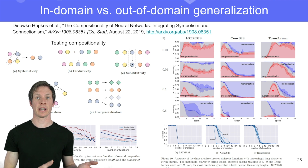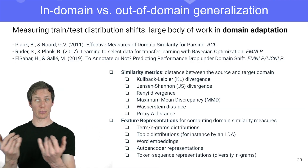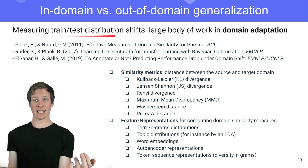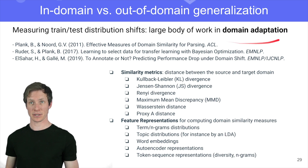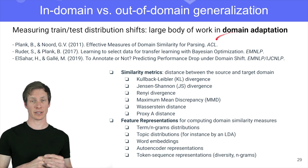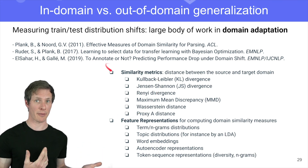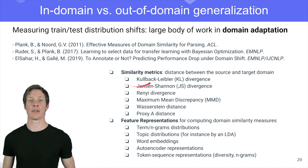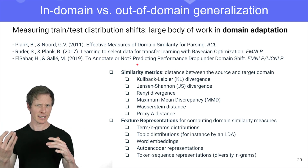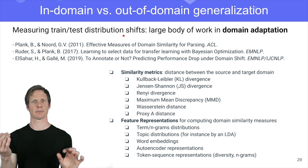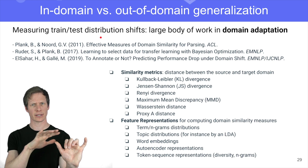Talking about in-domain and out-of-domain generalization raises the question of how you measure the distance between two domains. That's a very open question. There is a large body of work on domain adaptation that tries to extract features from datasets and compute similarity metrics on them. But it's definitely an open question: how can you measure the distance, in a statistical sense, between two datasets, and how can you know when you're no longer in-domain?